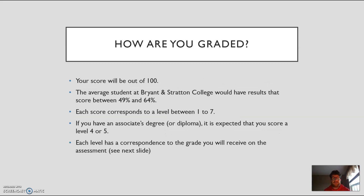So how are you graded? Your score is going to be out of a hundred. The average Brighton Stratton student scores between 49 and 64% roughly — so if you're typically a C, B, or A student you're looking at those percentages like 'what?' Yeah, 64% on this is pretty good. Anything above 50% you're in a pretty good spot. Your score out of 100 corresponds to a level — level one to seven. If you have an associate's degree or diploma, it's expected that you score about a level four or five. For a bachelor's you're looking at a level five or six. If you score better than that, awesome, but those are the general expectations.